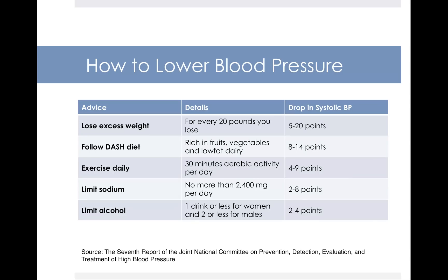The DASH diet has been shown to lower systolic blood pressure by 8 to 14 points. Other strategies also help: overweight people can drop blood pressure 5 to 20 systolic points for every 20 pounds lost; 30 minutes of regular exercise per day can drop it 4 to 9 points; limiting sodium to no more than 2,400 milligrams a day can reduce it 2 to 8 points; and limiting alcohol to less than 1 drink per day for women and 2 or fewer for men can lower it 2 to 4 points.